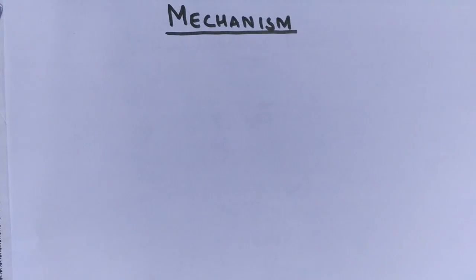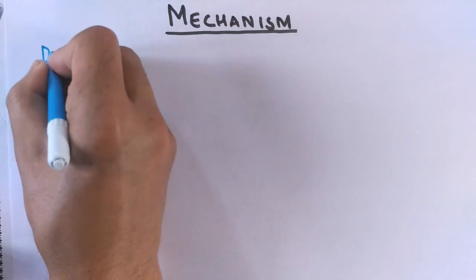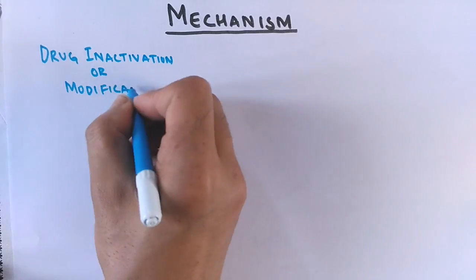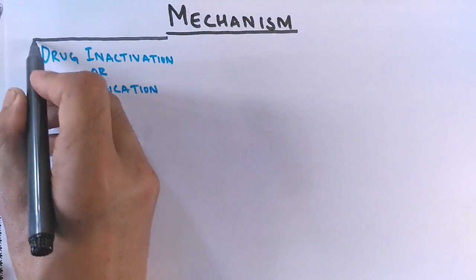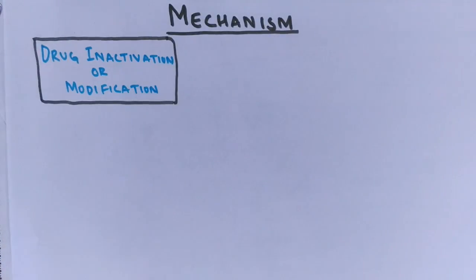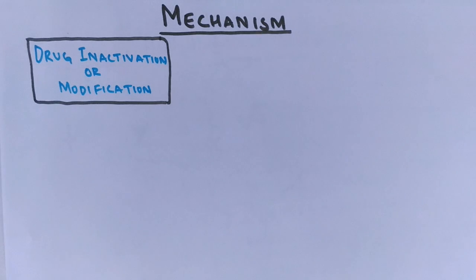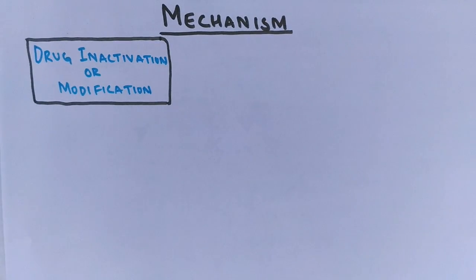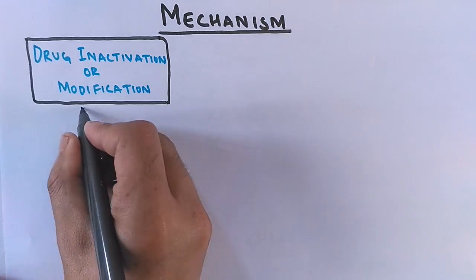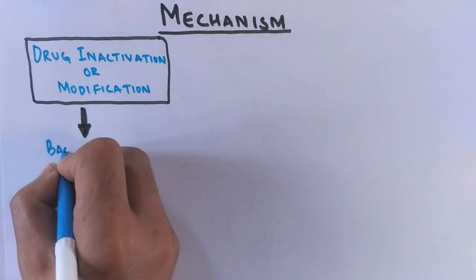Now we get to the mechanisms of antibiotic resistance. The first mechanism is drug inactivation or drug modification. In this mechanism, the drug is inactivated by some process or it gets modified to a new structure so that it may not be able to work in the way it was intended to work.